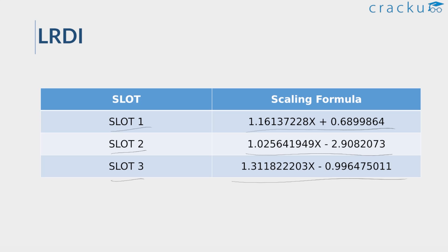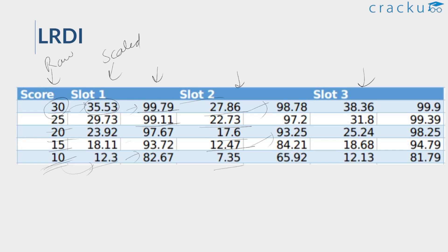Looking at Slot 3 LRDI scaled scores based on this formula: Slot 3 LRDI was very tough, so the scaled score went up. If your raw score was 30, your scaled score became 38.86, with a percentile of 99.9. These are the respective scaled scores and percentiles for the other raw scores in Slot 3.